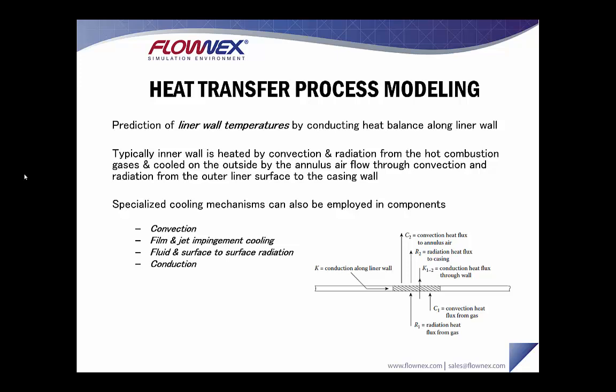Heat transfer process modeling is what allows us to predict liner wall temperatures, and we essentially do this by conducting a heat balance along the liner wall. Typically the wall is heated by convection and radiation from the hot combustion gases, and then cooled on the outside by annulus air flow through convection and radiation from the outer liner to the casing wall. Depending on the liner configuration, several specialized cooling mechanisms may also need to be employed, and I'll go into each of these in more detail in the next couple of slides.